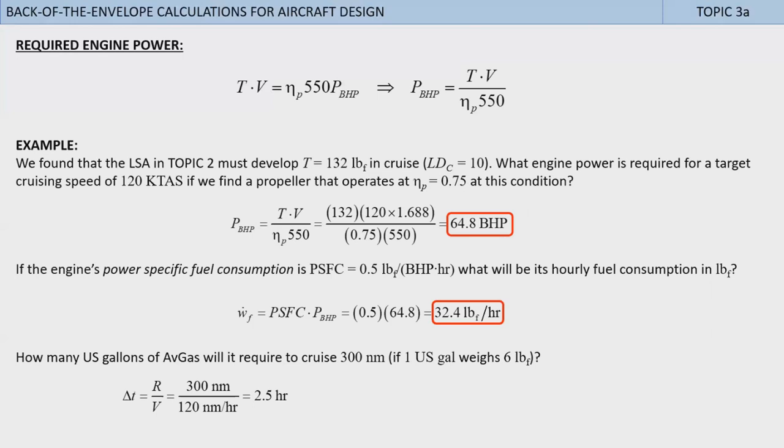Thus, we divide 300 nautical miles by 120 kTAS, which is in nautical miles per hour. This gives 2.5 hours. Thus, it is trivial to estimate that the required fuel weight Wf is the fuel flow times Δt, or 32.4 pounds per hour times 2.5 hours, which gives about 81 pounds. Divide by 6 pounds per gallon to get 13.5 U.S. gallons of avgas.